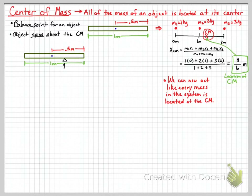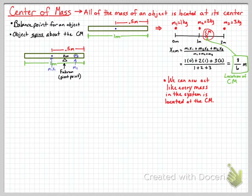We can also place a fulcrum on a meter stick, creating a pivot point or axis, and consider that to be the center of mass. We can then add a mass on one side — call it mass 2 — some distance away from the center of mass, and we'll call that distance x2.